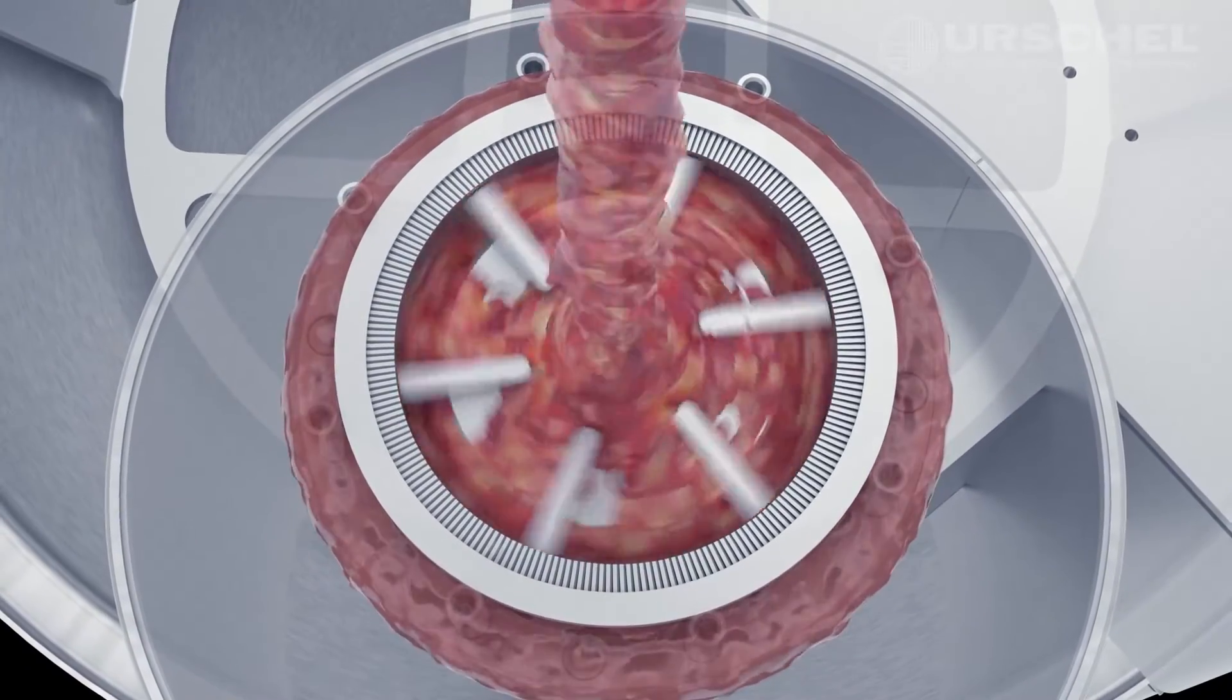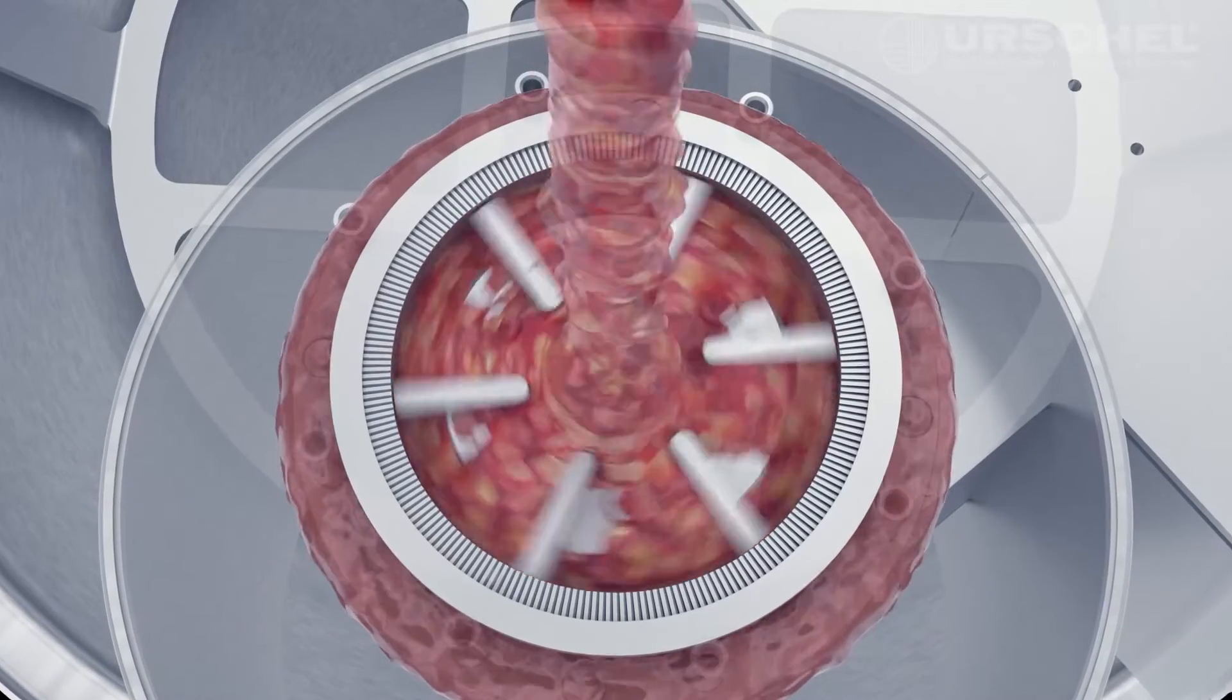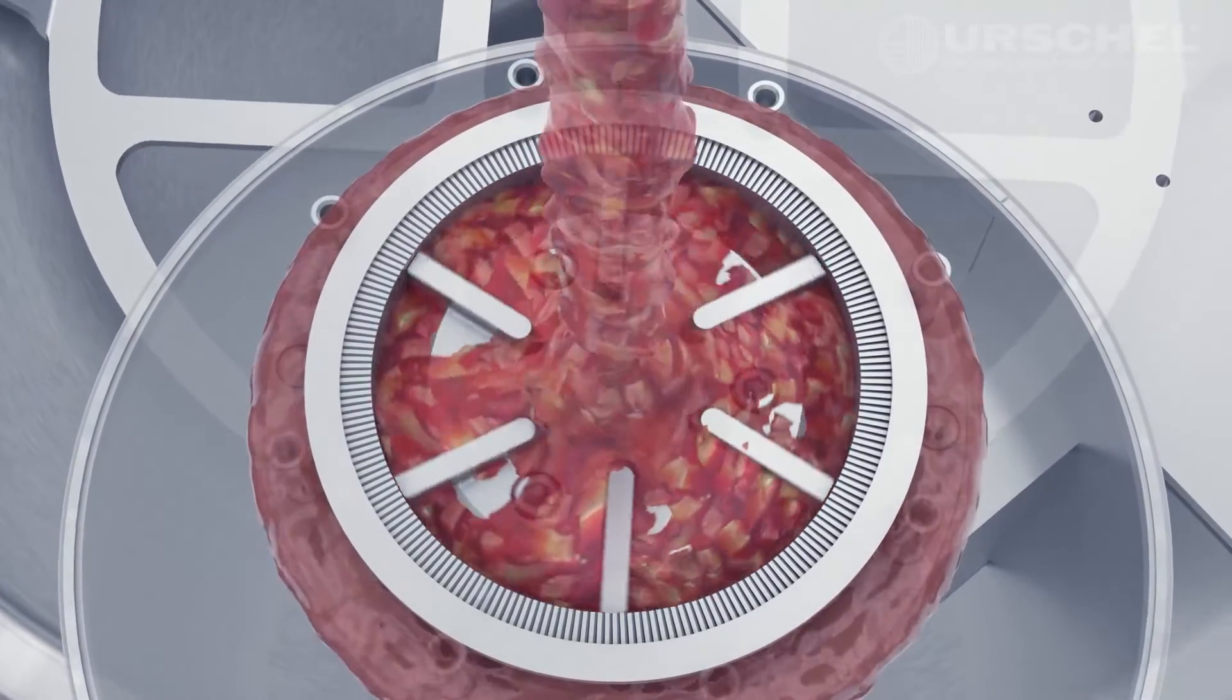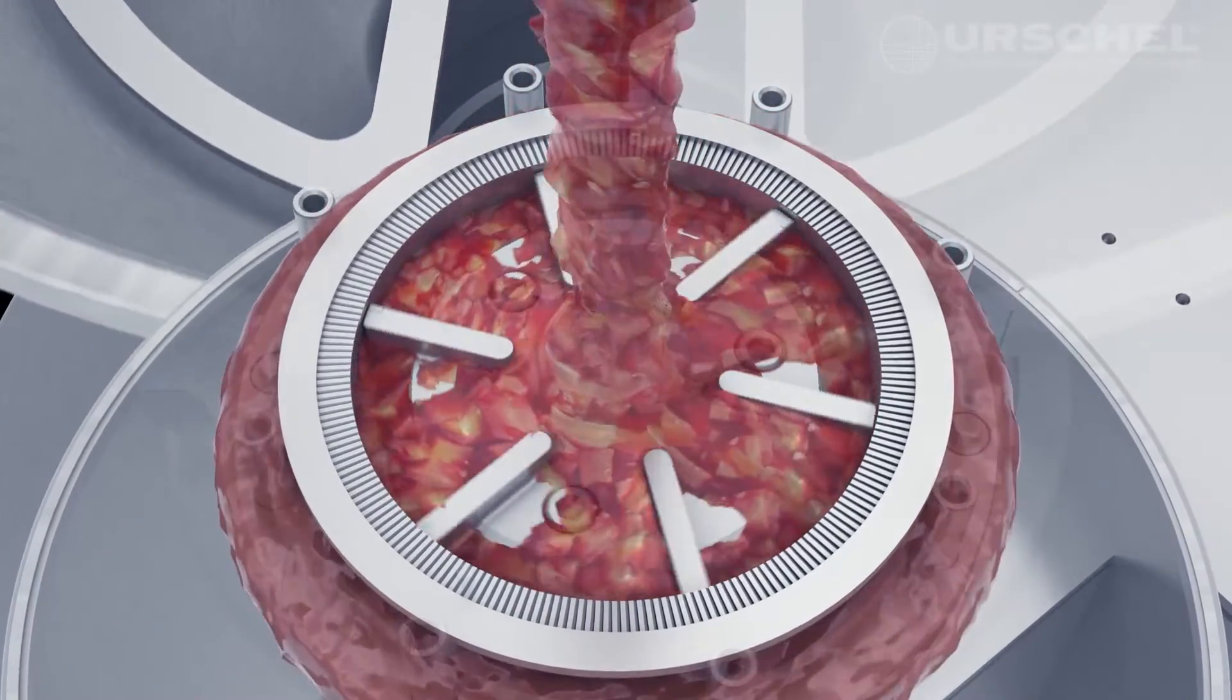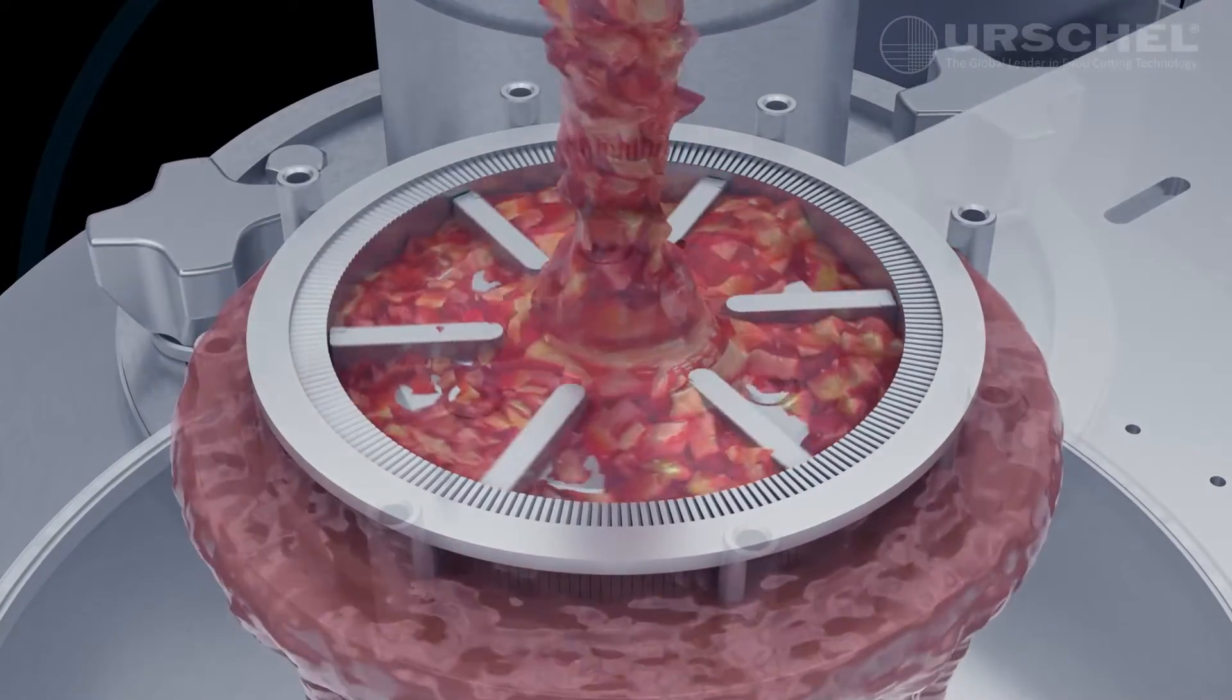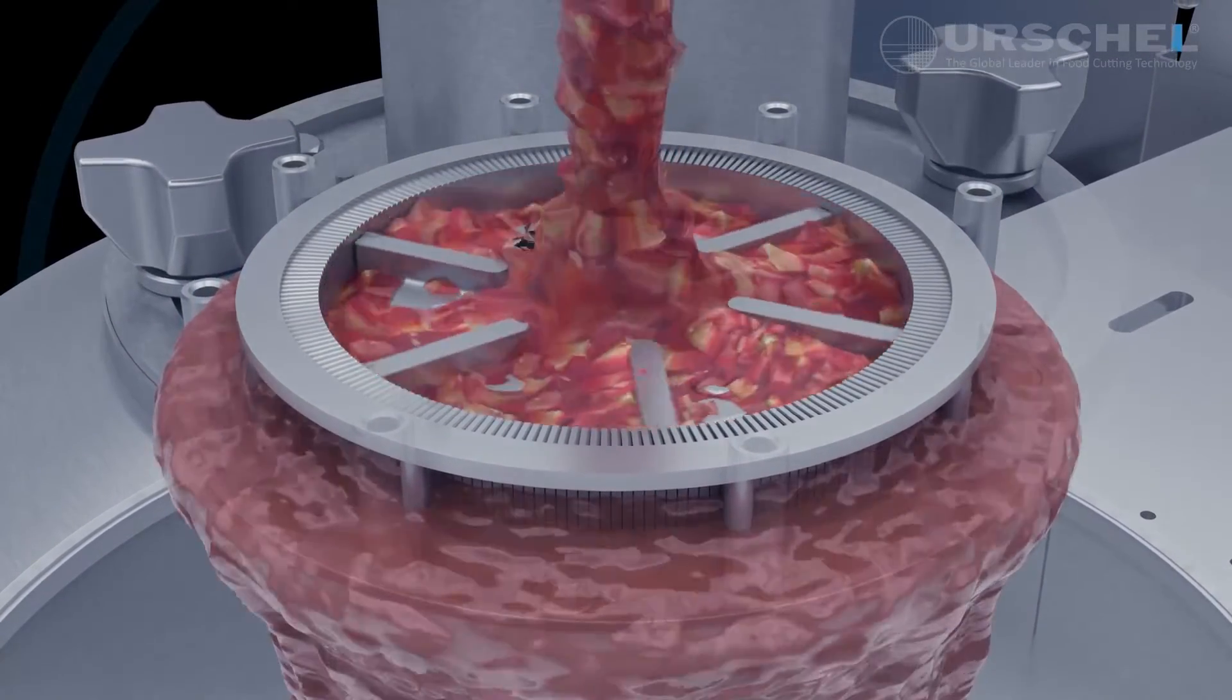Product is guided to the center of a high-speed rotating impeller. As the product revolves inside the ring of blades, centrifugal force causes pressure against the blades equal to several thousand times the weight of the product. This forces the product to the impeller tips which carry the product past the sharp sheer edge of the micro cut head blade.